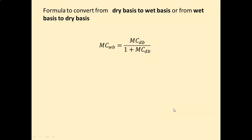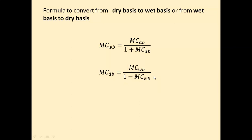The formulas to convert between dry basis and wet basis are: when dry basis is given, MCWB = MCDB / (1 + MCDB); and when wet basis is given, MCDB = MCWB / (1 − MCWB).